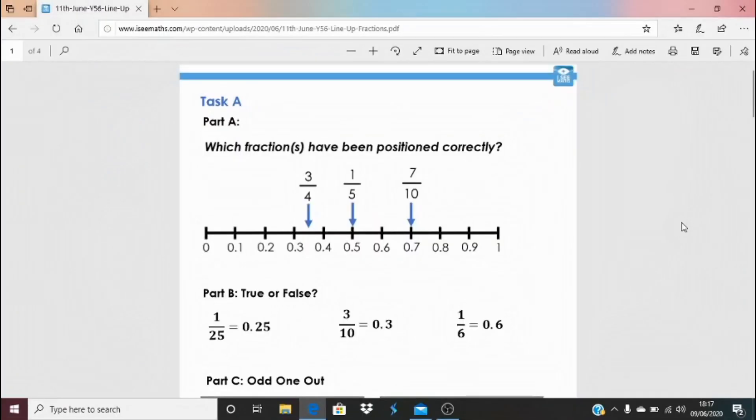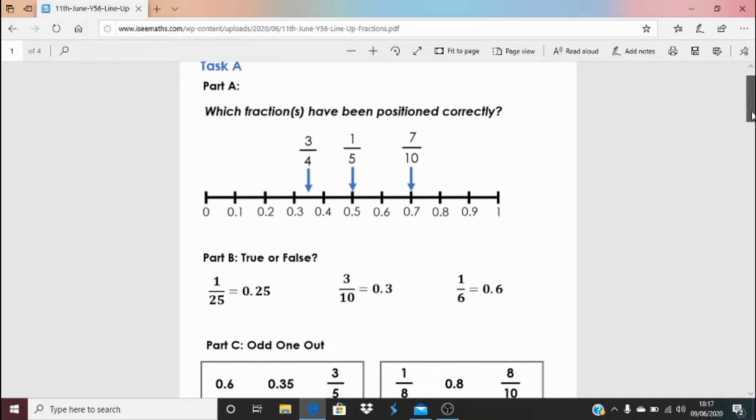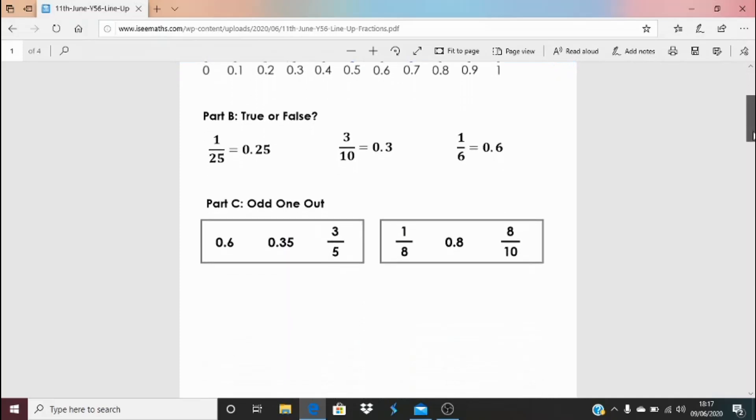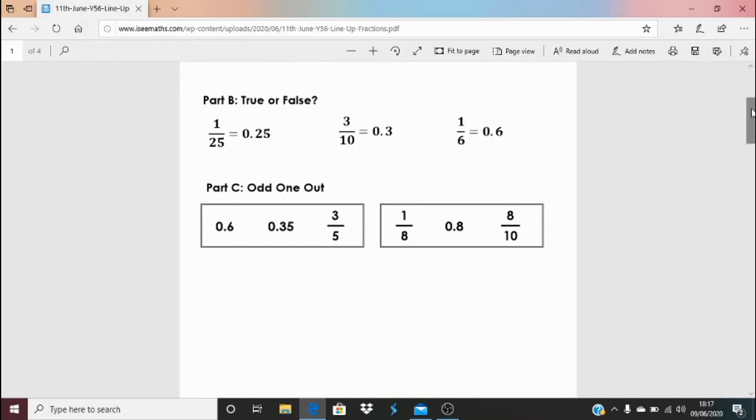So for today's task, again, click on that blue link underneath the video. This time there's a task A and B and C. I try and make the tasks quite open-ended generally, but being able to convert fractions and decimals is something you maybe haven't learned about much. You might be in year five and you haven't done it at all, or it might be something you've already got a lot of skill in. So I've tried to give lots of options. And so task A: which fractions have been positioned correctly, and true or false. And then in these examples here, of these three, which one is the odd one out? And then of these three—these fractions and decimals—which one is the odd one out.